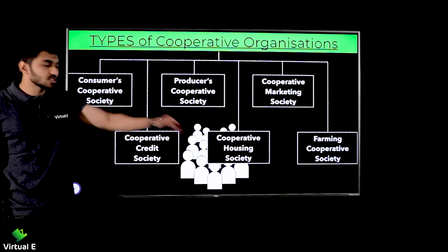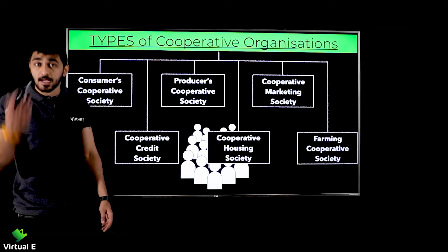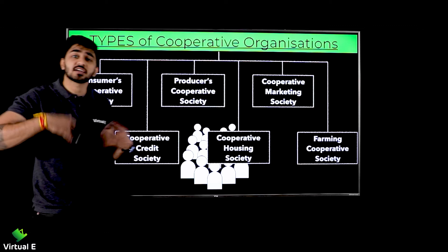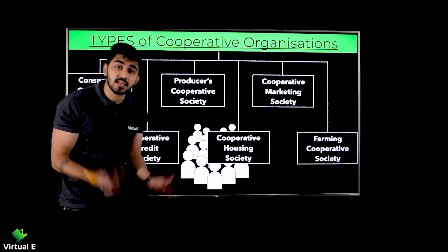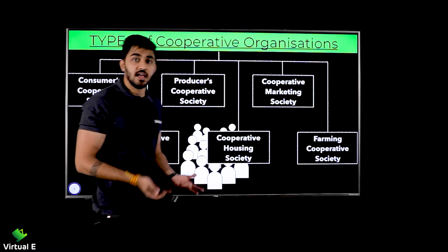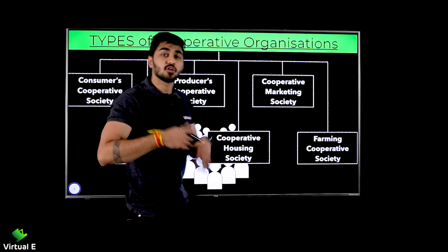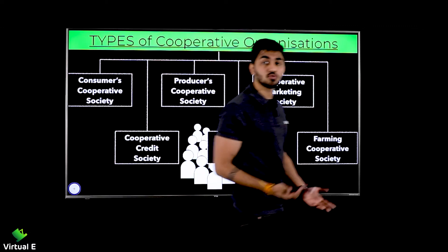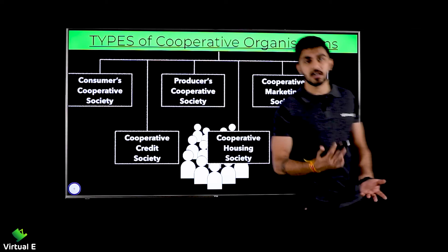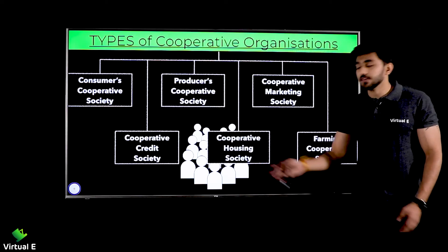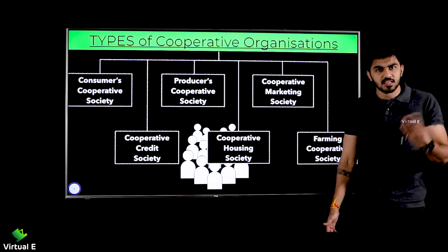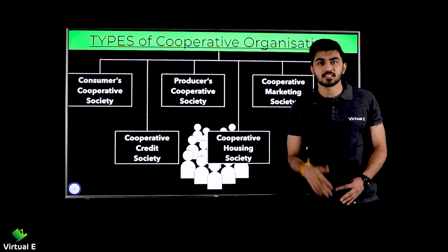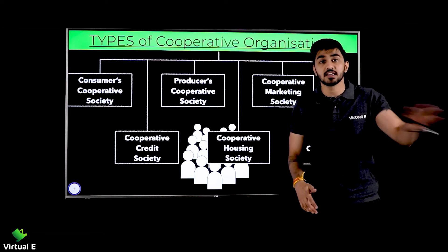The cooperative housing society means there are people who don't have a house, people who want to build a house, people who have a dream of making a house. These are landless people, people who have no house. So what do they do? They pool a little money together gradually.